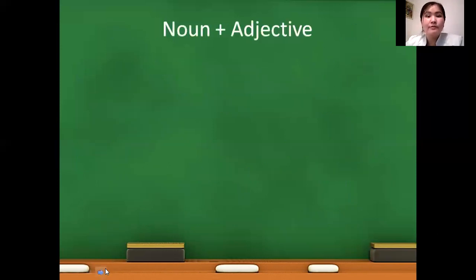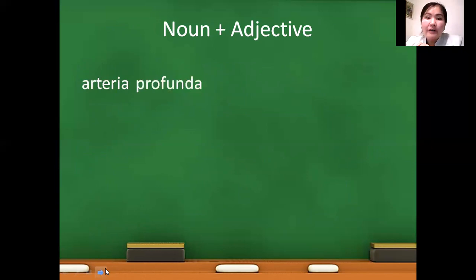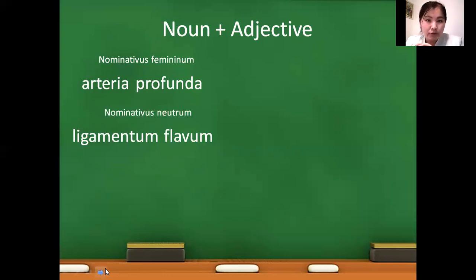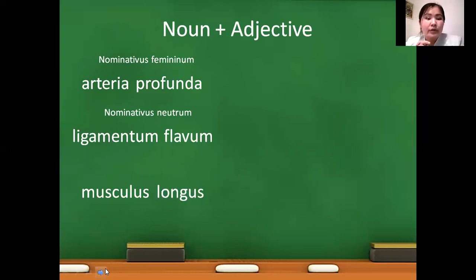So let's discuss the first type of anatomical terms: the noun plus adjective structure. For example, arteria profunda. You know the rule that the adjective must be used in the same gender, number, and case as the noun. Like ligamentum flavum — both terms are used in nominativus neutrum form. Or musculus longus — both adjective and noun are used in nominativus masculinum.